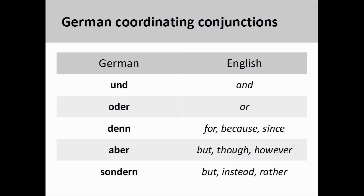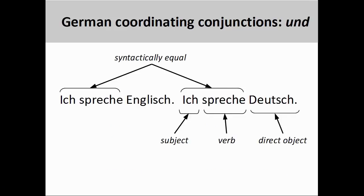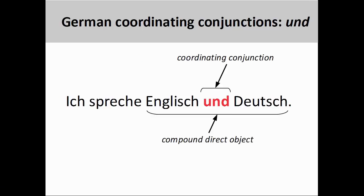But first, let's take a closer look at how these conjunctions function in German sentences. As in English, the coordinating conjunction 'und,' meaning 'and,' can be used to simplify sentences where there is syntactic equality. The two sentences you see on the screen — a translation of the sentences from the beginning of the presentation — share the same first-person singular personal pronoun in the nominative case, 'ich,' and a first-person singular present tense verb, 'spreche.' As these sentence elements are syntactically equal, we can remove the redundant elements and join the remaining direct objects with 'und,' creating the compound direct object you see on the screen.